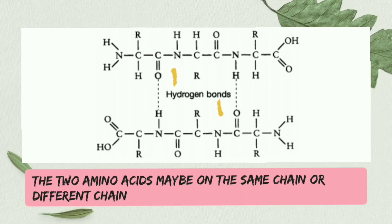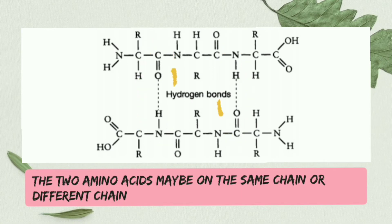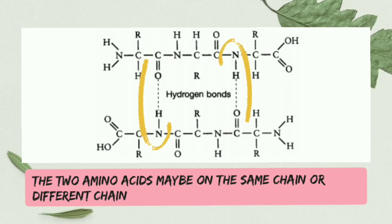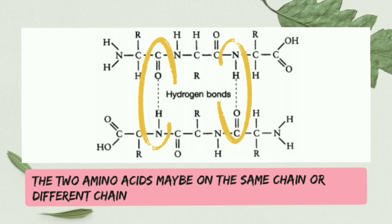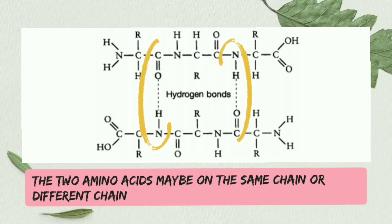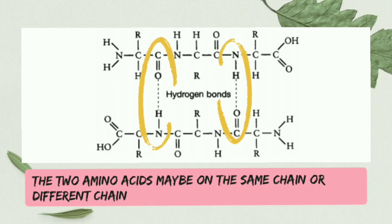In secondary structure, many primary structures are joined together. One primary structure is a polypeptide chain and another primary structure will have another polypeptide chain. So in a secondary structure there are many polypeptide chains. Hydrogen bonds can form between amino acids of the same polypeptide chain or amino acids of different polypeptide chains to produce the secondary structure.